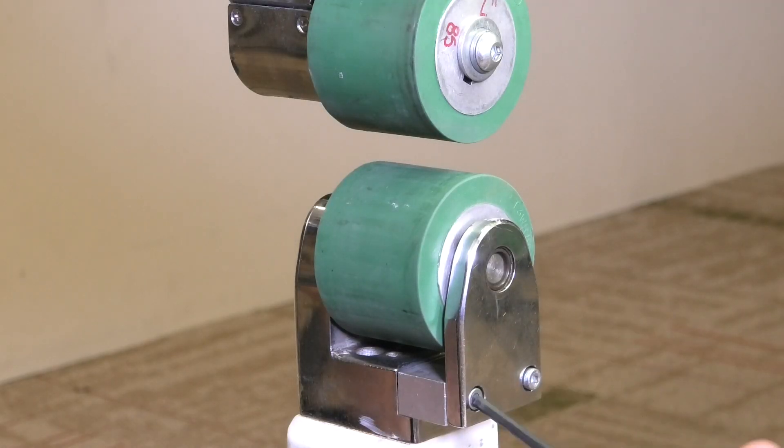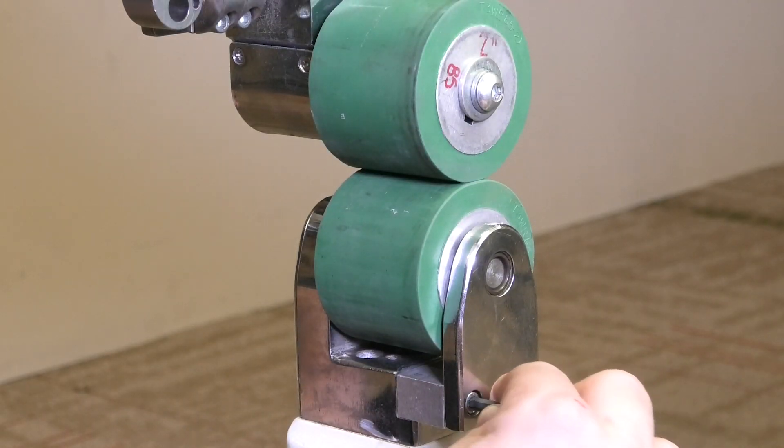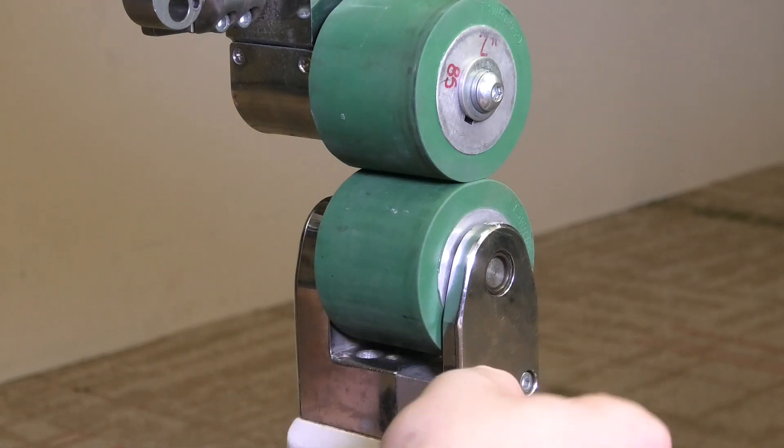So now what I like to do is snug these up, don't lock them down fully, and I like to apply pressure with the upper weld roller, then tighten these in position.